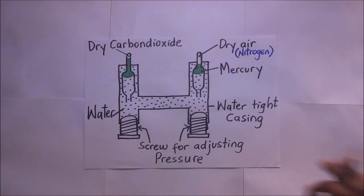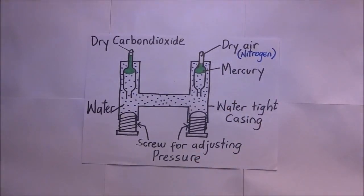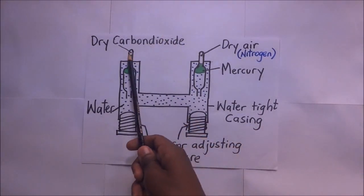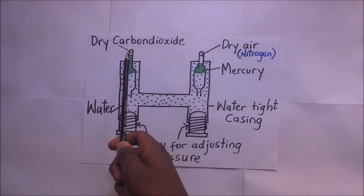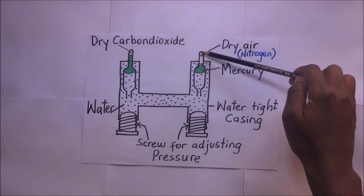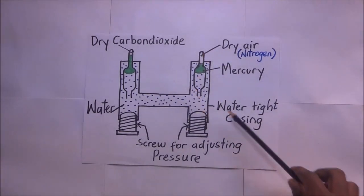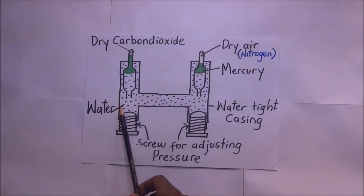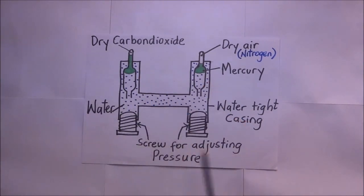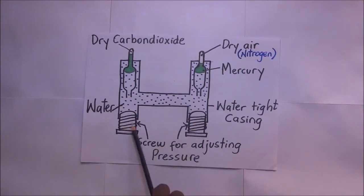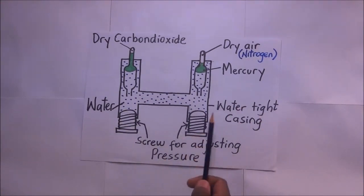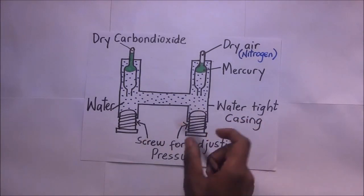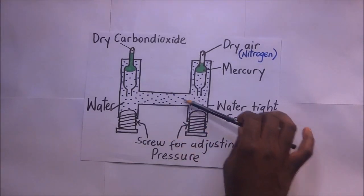Here is a diagram showing the apparatus used by Andrew when carrying out his experiments. When he was carrying out his experiment, he was basically using dry carbon dioxide, which is in this portion, and in this portion here is dry nitrogen. We also have mercury, a watertight casing, and a constant water bath. There are screws for adjusting pressure — adjusting those screws regulates the pressure inside the system.